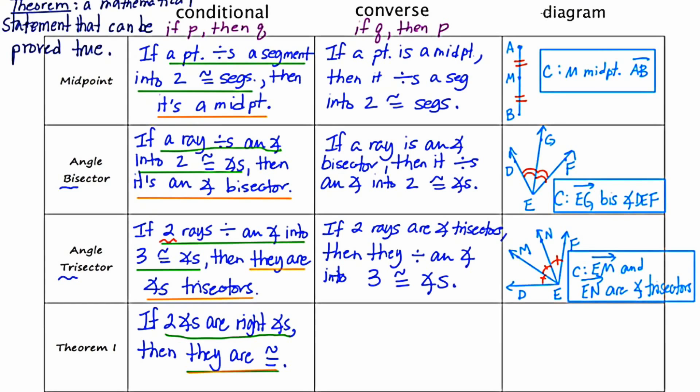Something really interesting happens at this moment, so pay attention. For the first seven definitions, when we formulated the converse it was as true as the conditional — and that's true of any definition. If you write a definition in if P then Q form, or in if Q then P form, it will be true. But not all theorems are reversible. The converse of this theorem reads: if two angles are congruent, then they are right angles.